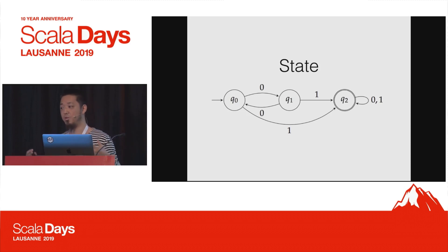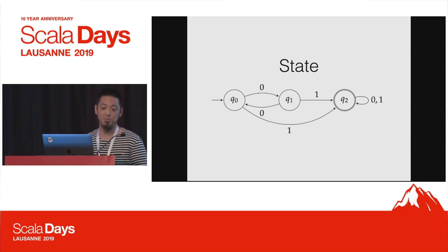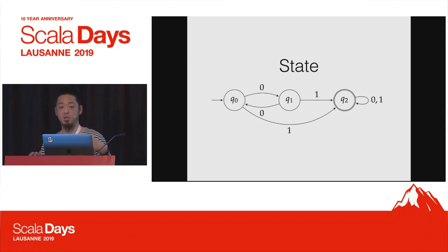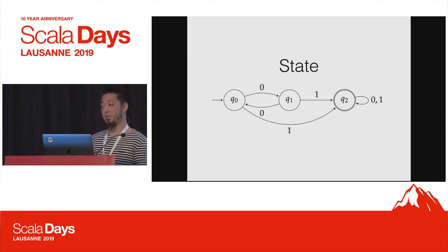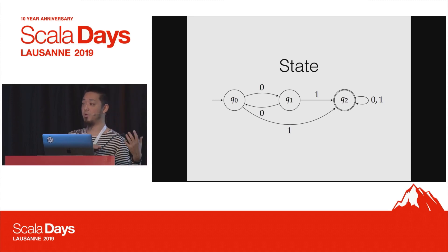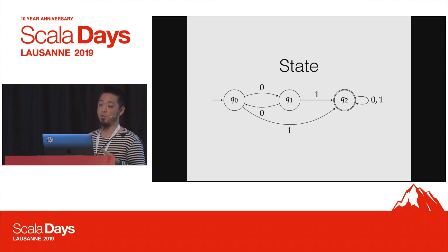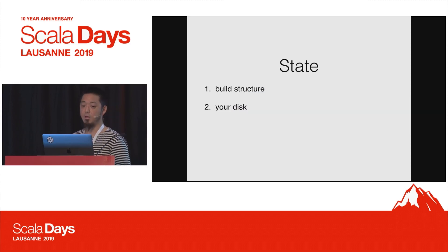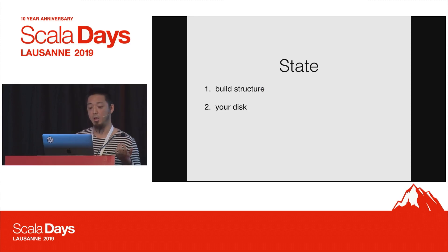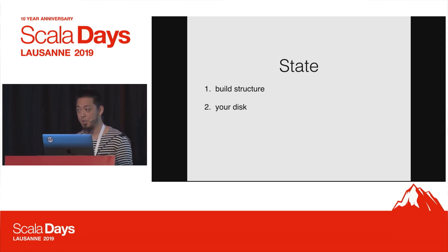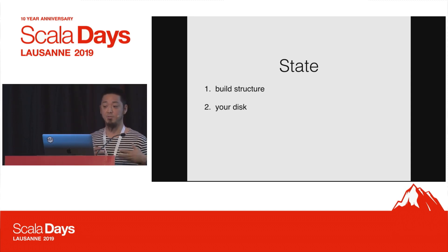A good starting point for functional programming is to think about effects. By capturing an effect as a data structure, you make the rest of the application more like a repeatable pure function. There is a data structure inside SBT called State. What we track there is the build structure, and conceptually it also maps to your disk — your source code, class files, jars, and libraries. You can think of them essentially as effects.